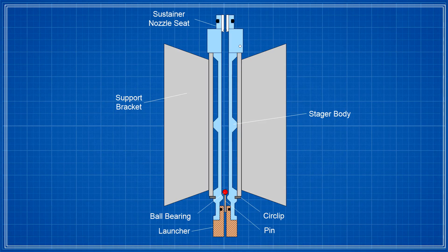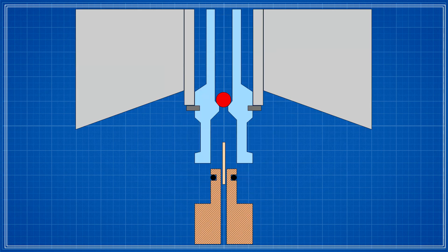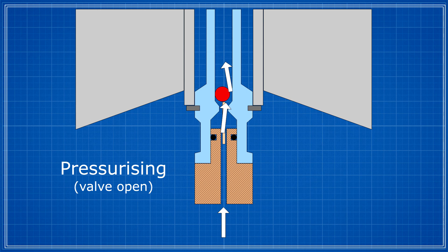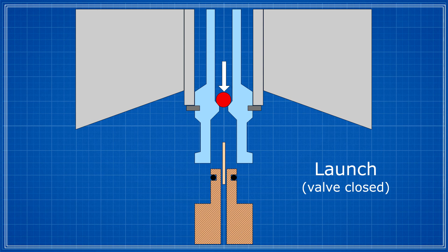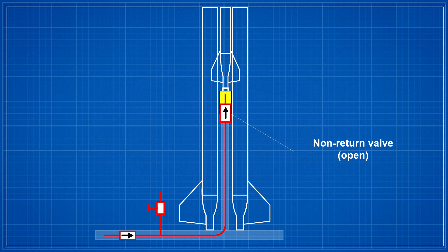Here is a cross section view of the stager body. This non-return valve is specifically designed to be forced open via a pin while the rocket's on the pad. This allows us to depressurize the sustainer easily in case we need to abort the launch. As soon as the rocket launches, this valve closes. There's a second non-return valve in the launcher to prevent water flowing back, with a pressure release valve between these two non-return valves.